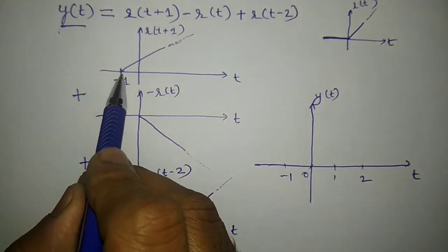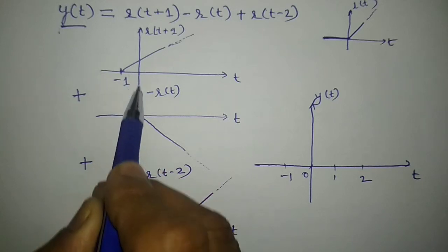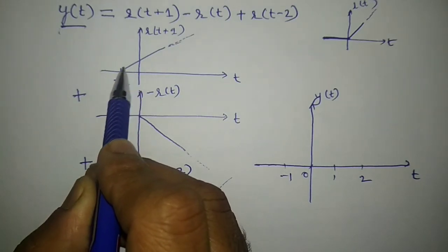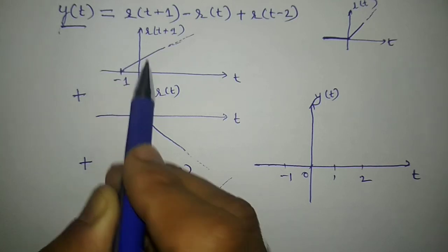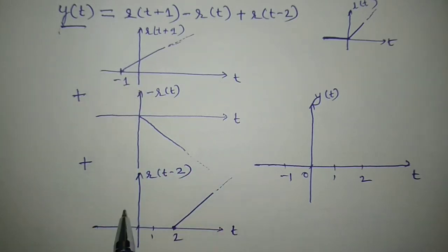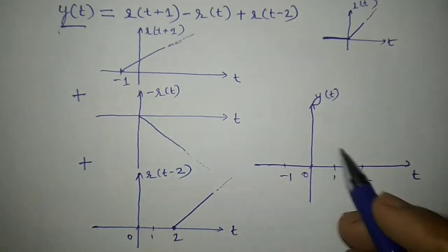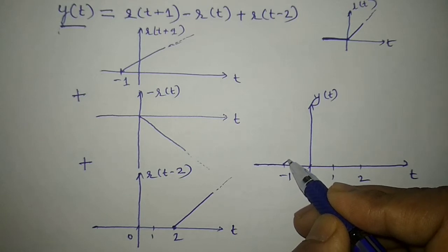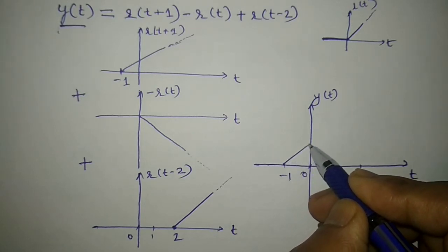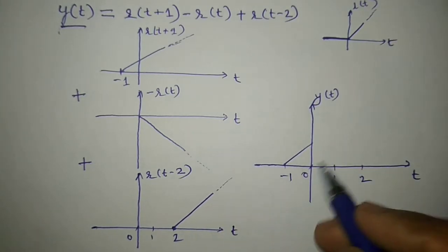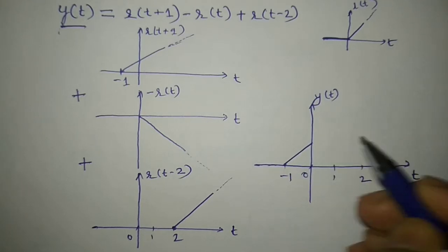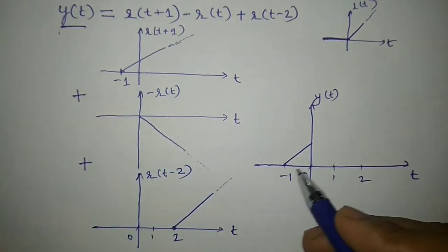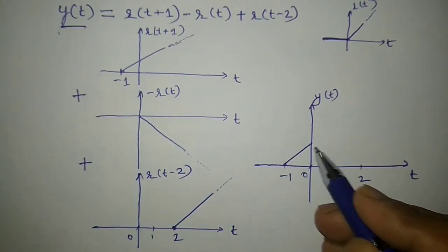From minus 1 to 0, I have only the signal r(t+1), which is being added with zeros from the other signals. So the shape of that signal remains as it is from minus 1 to 0 — only one signal is active and its shape is preserved.